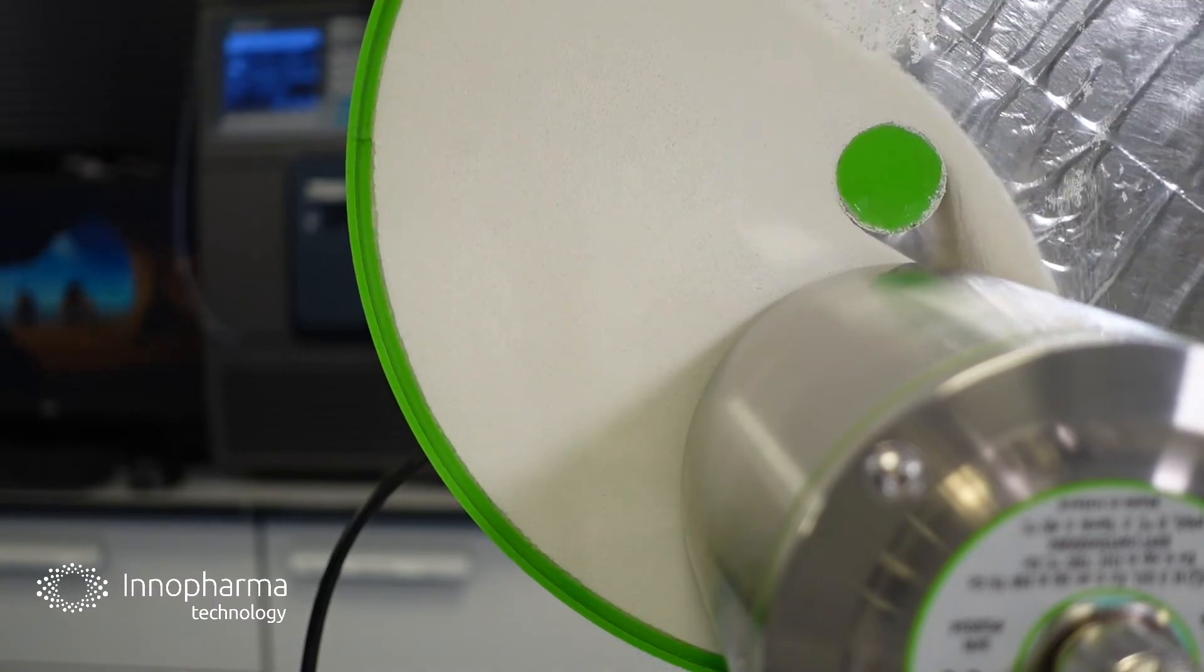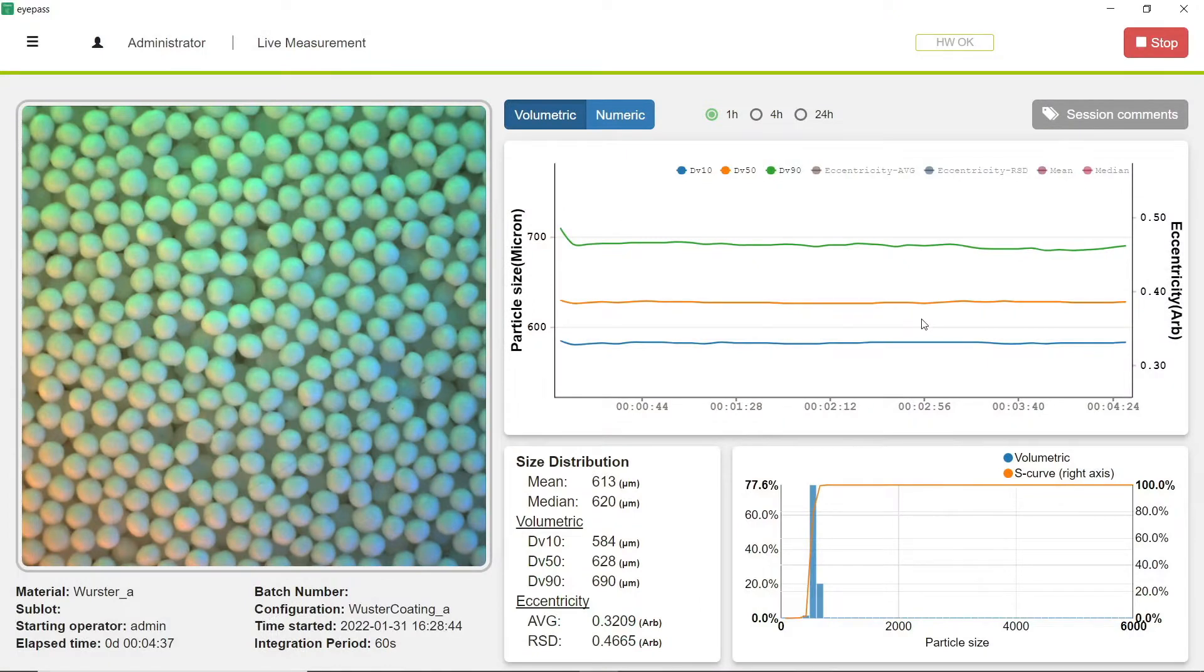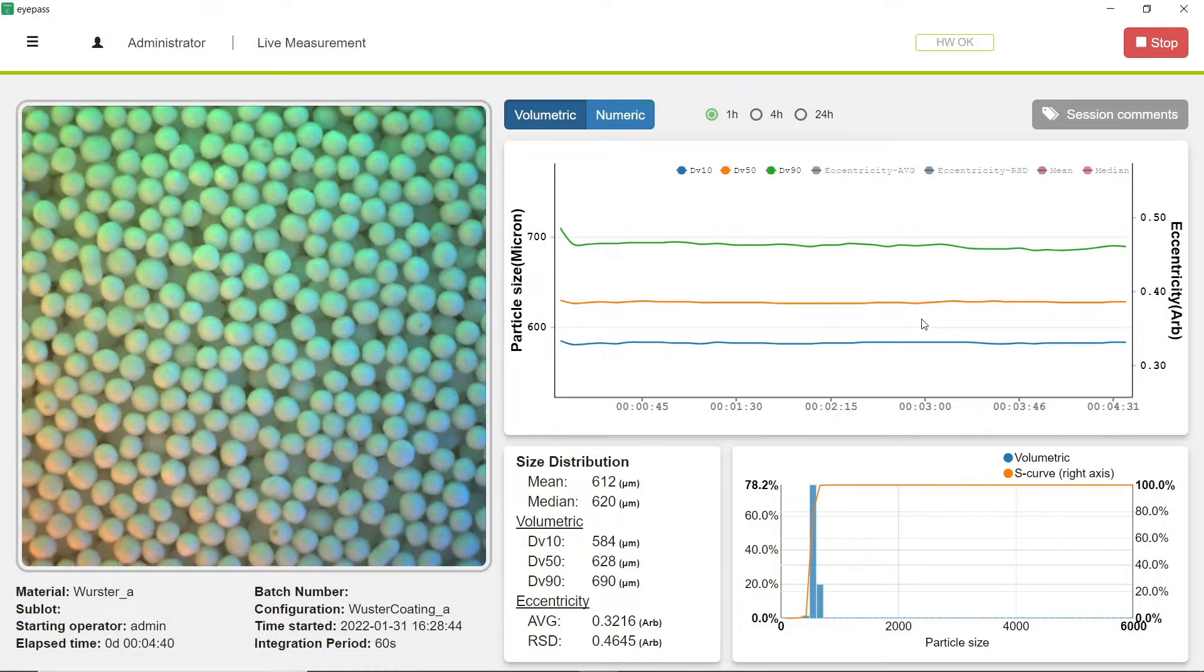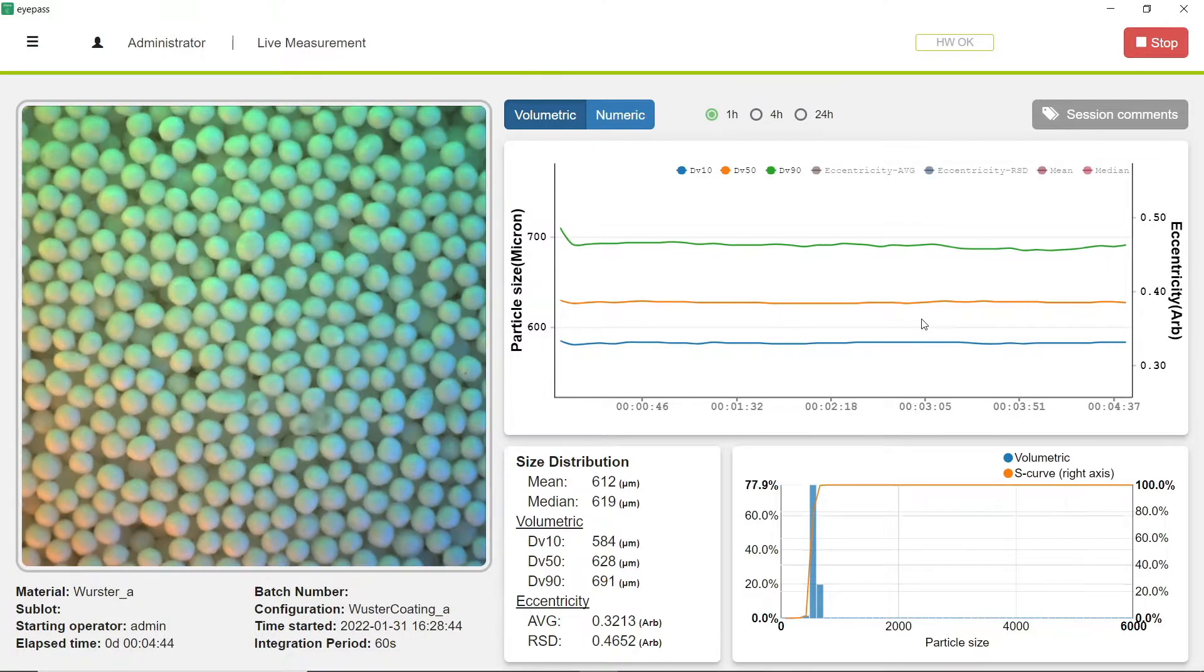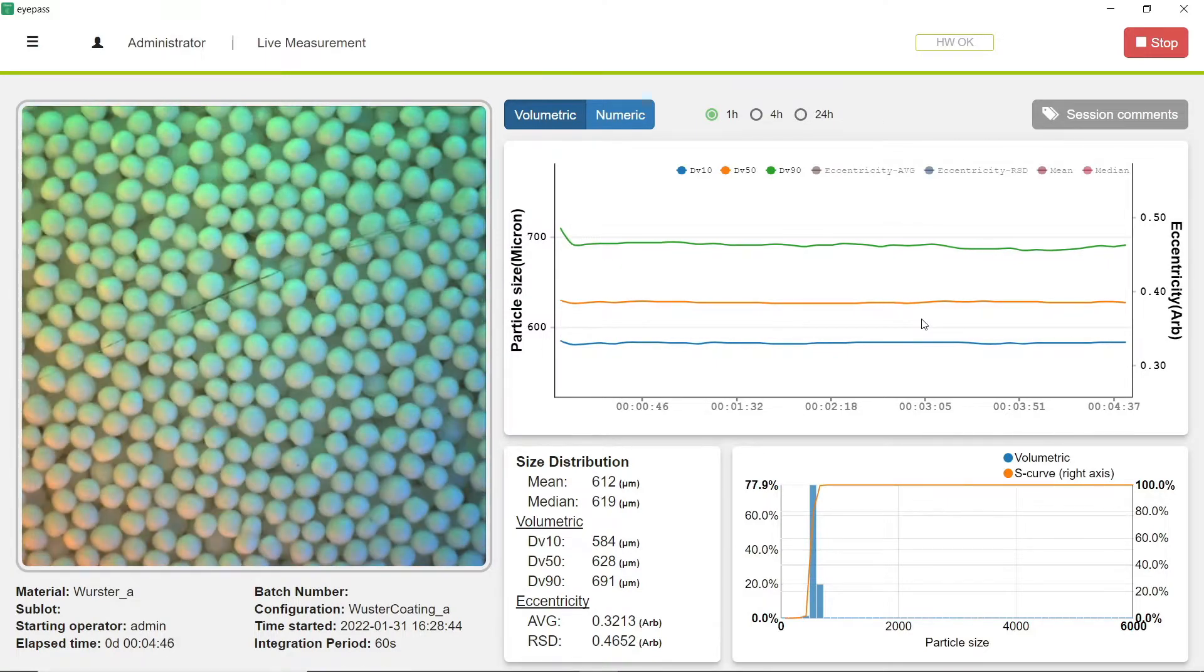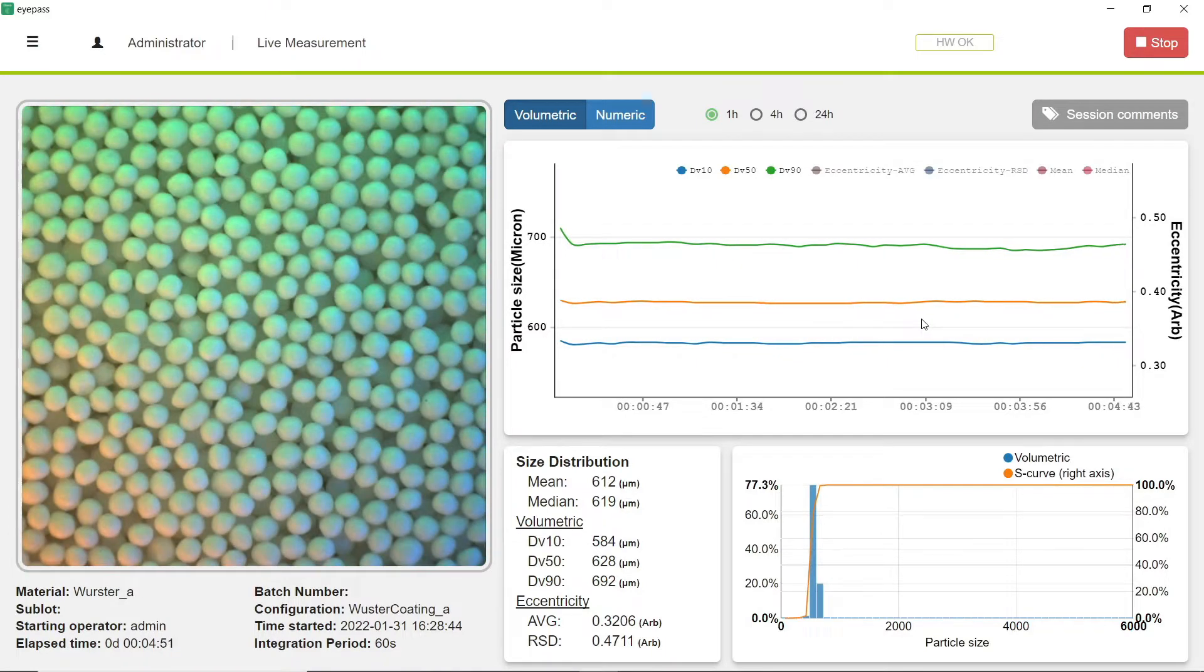And if we go further to look at its software I-PASS running, this is I-PASS version 3.0 now with our built-in machine learning image analysis. We can see we're getting our data here in real time reported back to us in a non-product contact fashion, and we can see the D10, the D50, and the D90 being reported back as 628 for the D50 average.